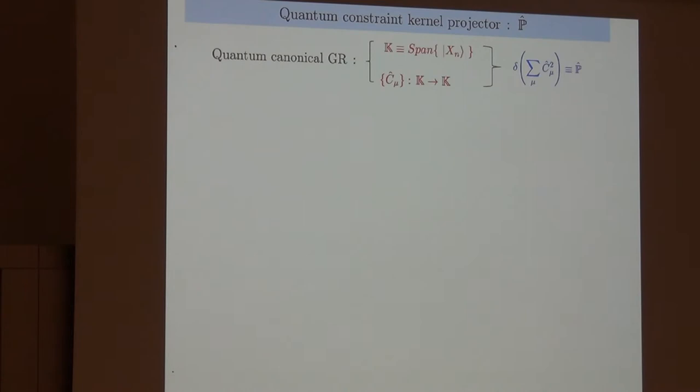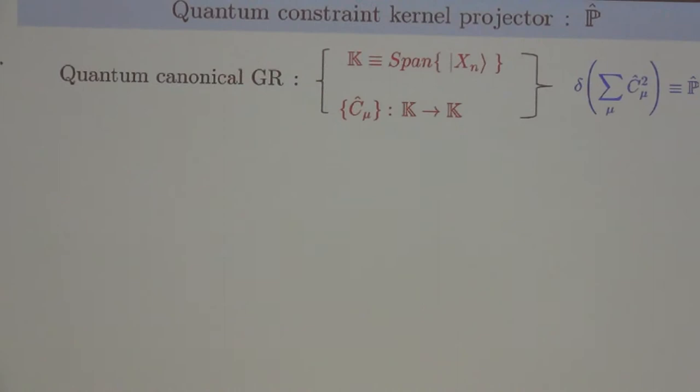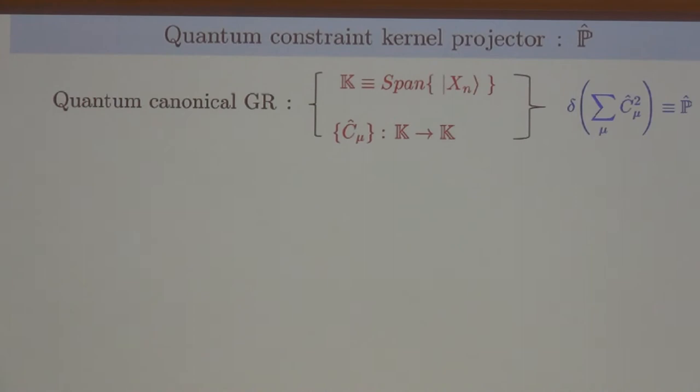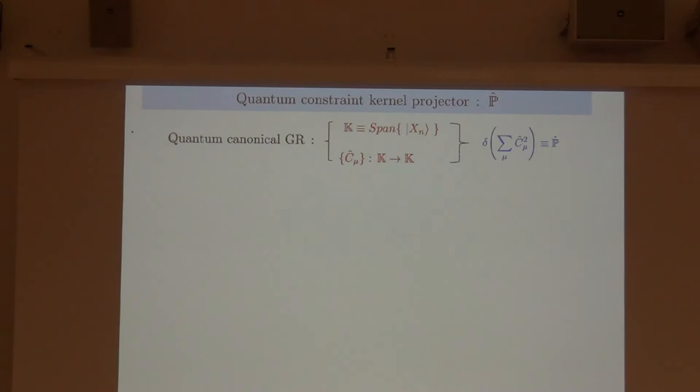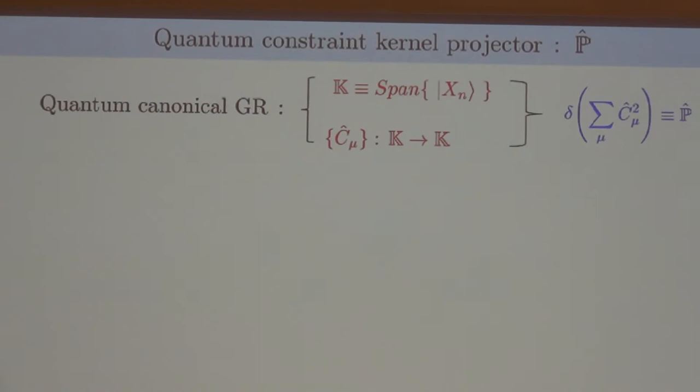The work I'm presenting here is about extracting exact Schrodinger dynamics from canonical quantum gravity theory governed by quantum constraint kernel projector P. And so such theory has a kinematic Hilbert space that represents the unconstrained ADM phase space, which we call K.